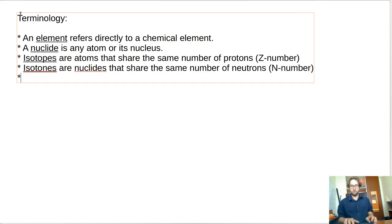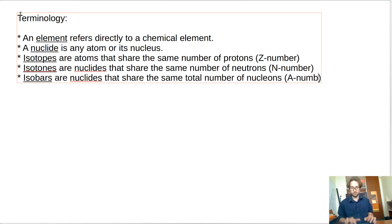Similarly, we have a word called isotones. So isotones are nuclides that instead of sharing the same number of protons, share the same number of neutrons, or they have the same N number.